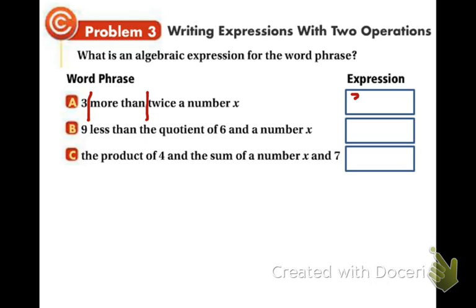More than twice a number X. Well, write down the 3. What does more than mean? Well, we talked about this earlier. That means adding. So we have 3 plus twice a number X. Another way to think about that is doubling X. So we're going to have 2 times X. That's multiplication. So 2X. So the expression that represents that word phrase is 3 plus 2X.